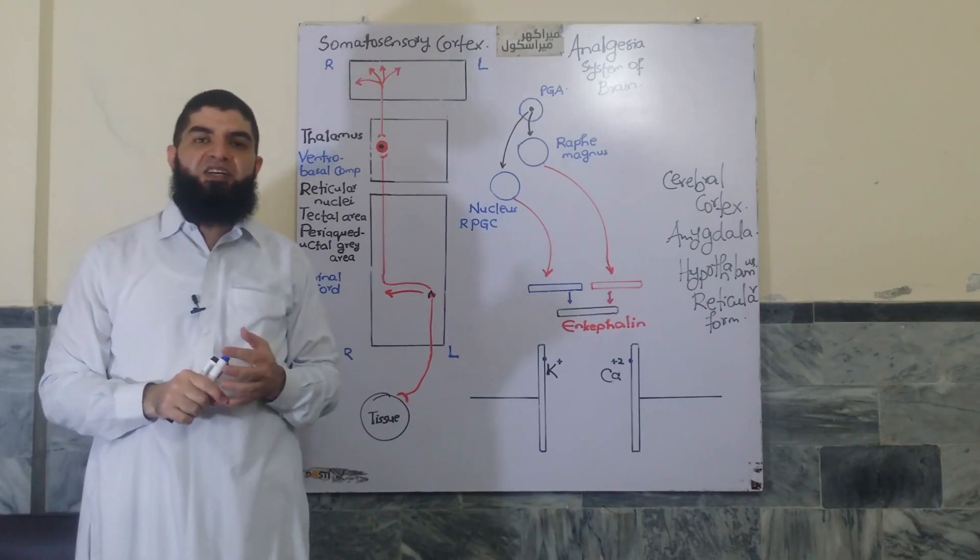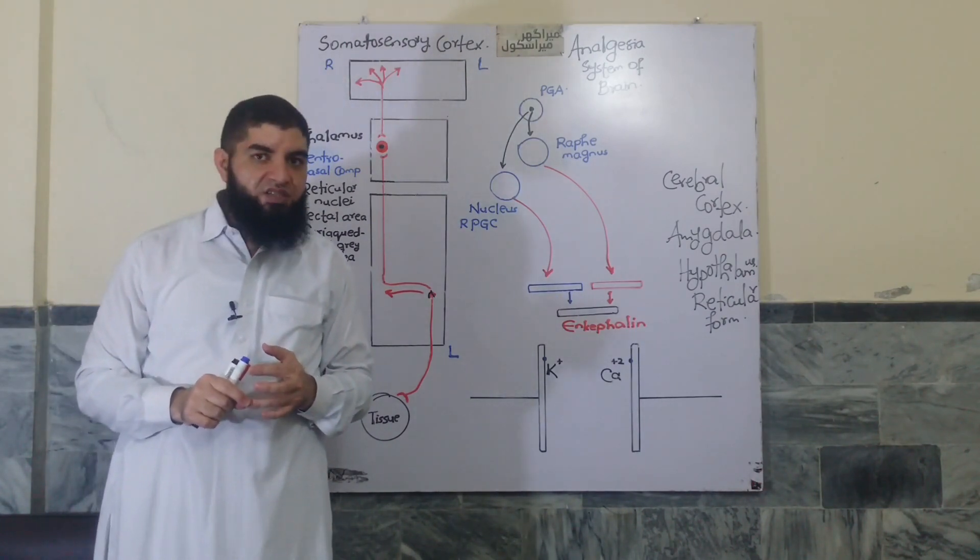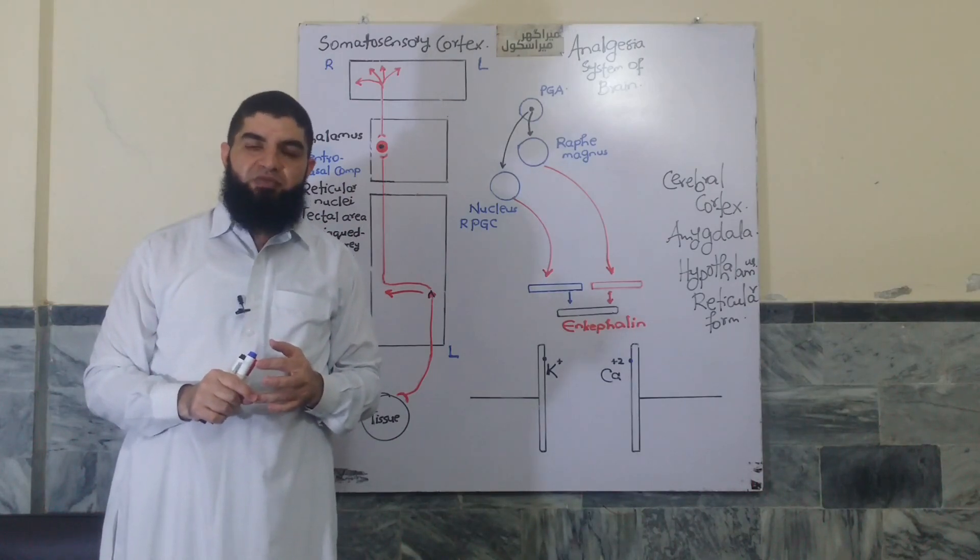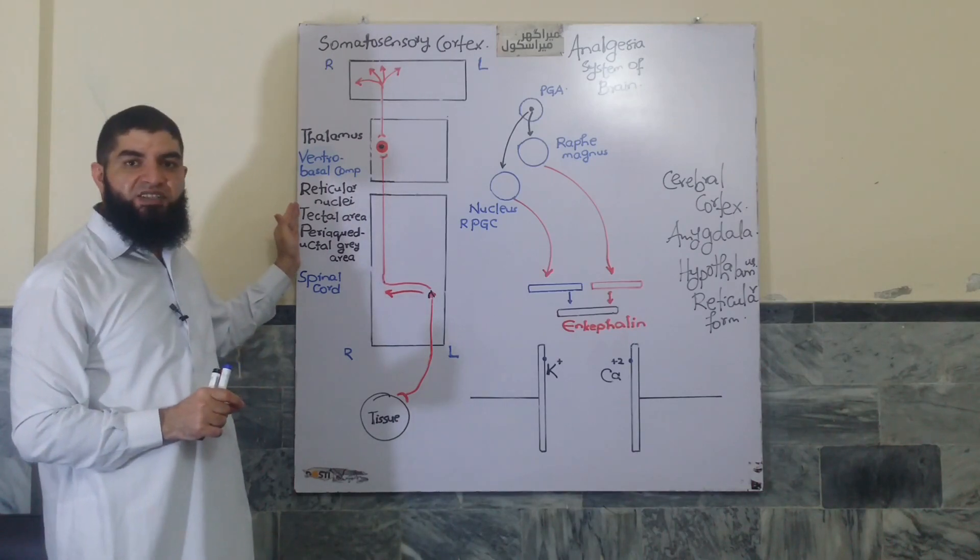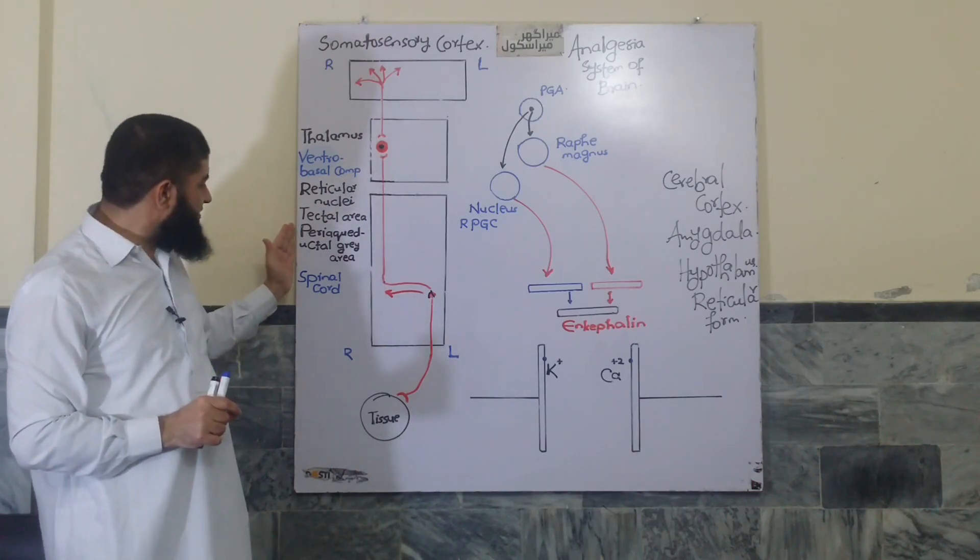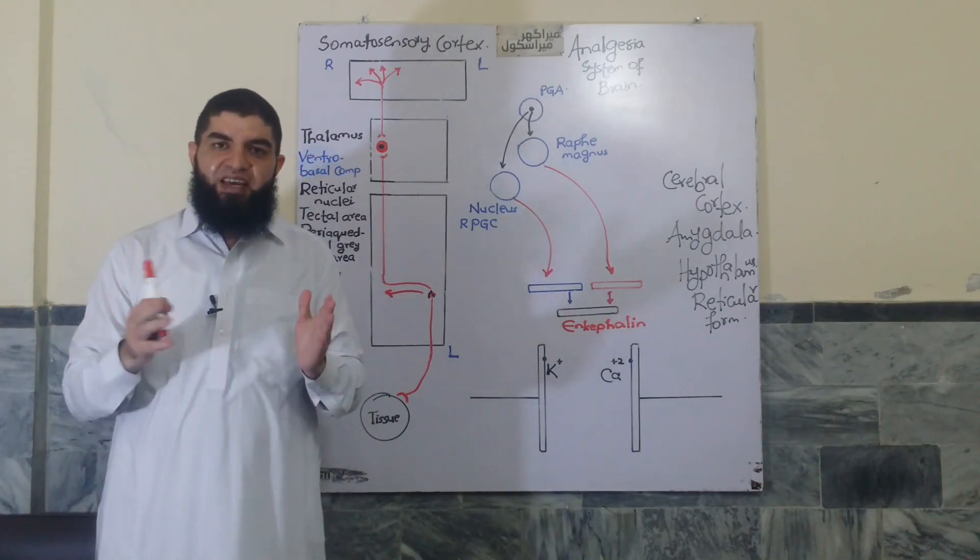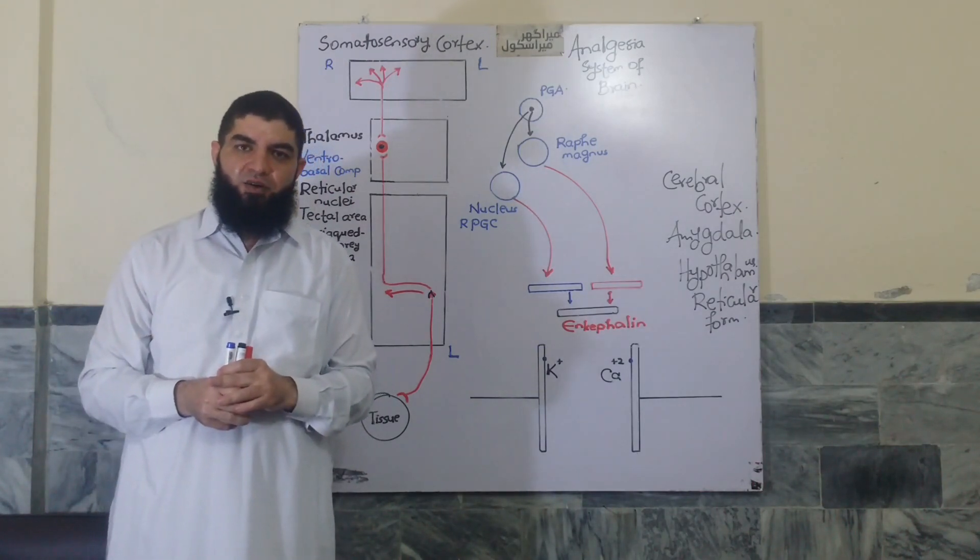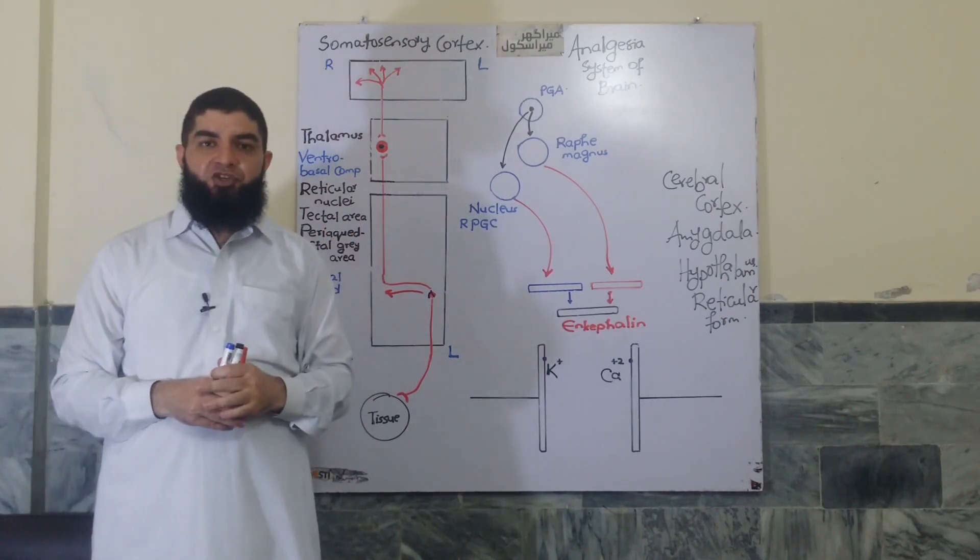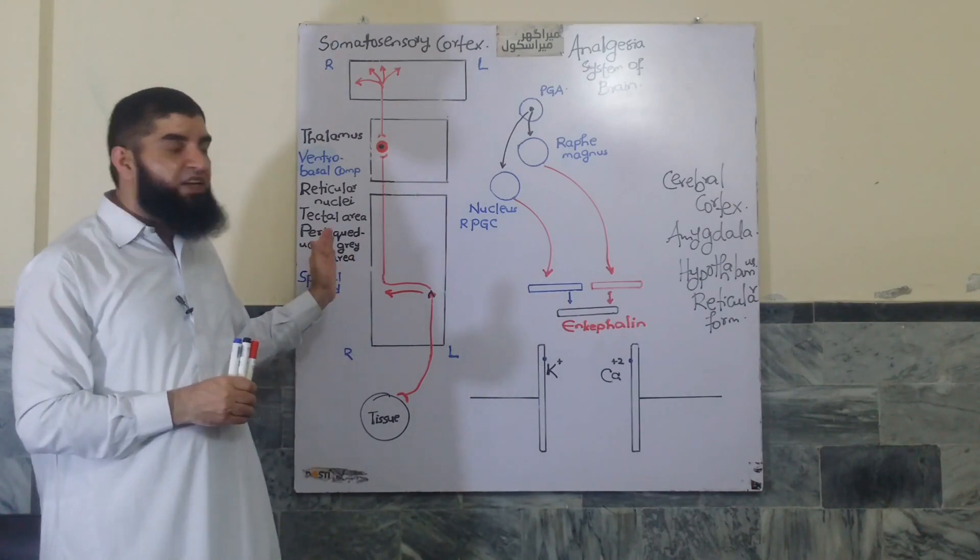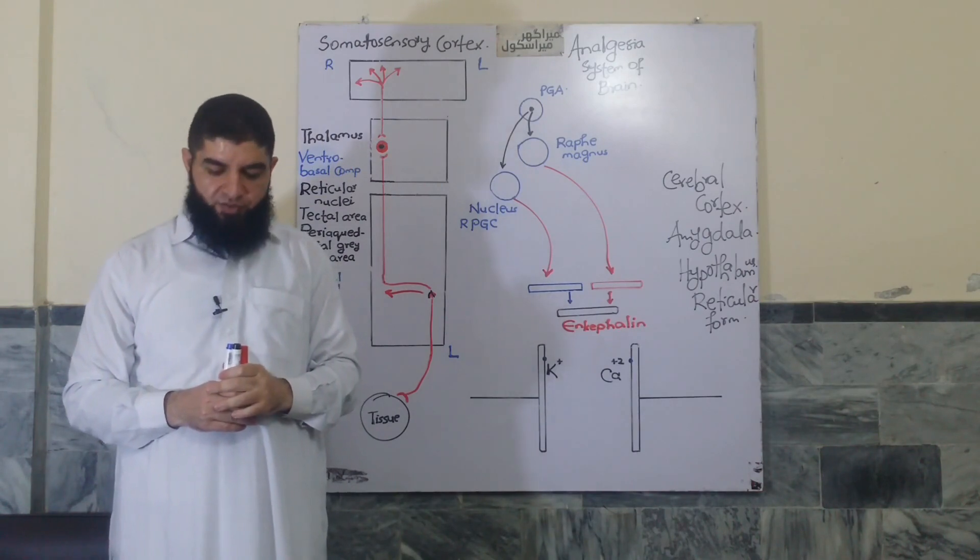Some of them terminate or project to the reticular nuclei of the pons medulla and mesencephalon, some of them project to the tectal area of the mesencephalon, while some of them project to the periaqueductal area gray matter surrounding the aqueduct of sylvius. And these alternative destinations have their own implications because most of them constitute the components of the brain analgesia system.